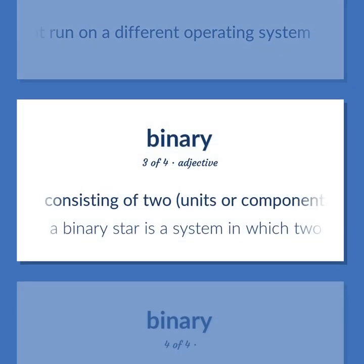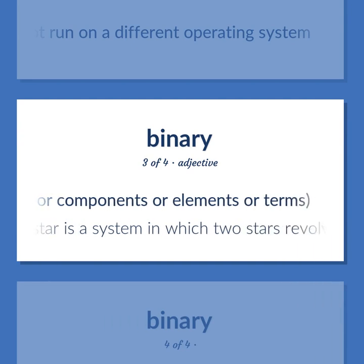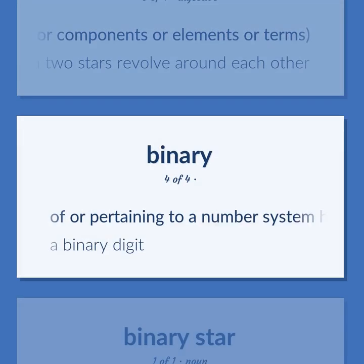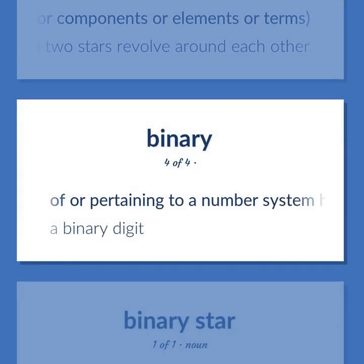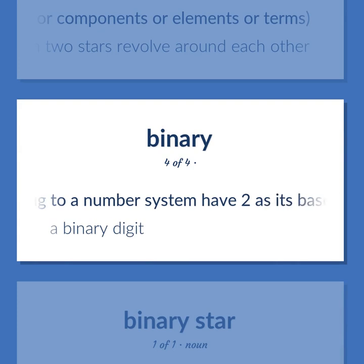Consisting of two units, components, elements, or terms. A binary star is a system in which two stars revolve around each other. Pertaining to a number system having two as its base. A binary digit.